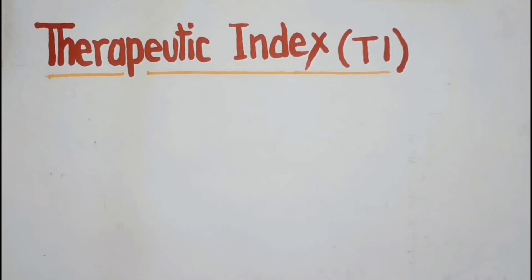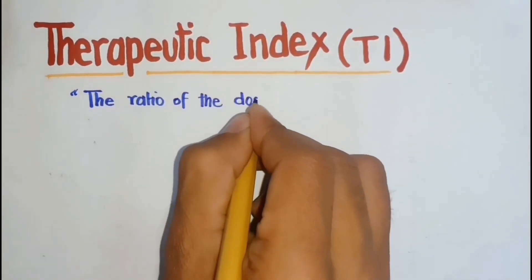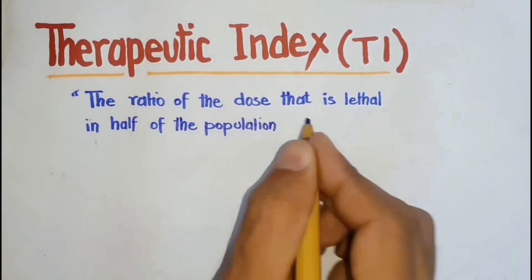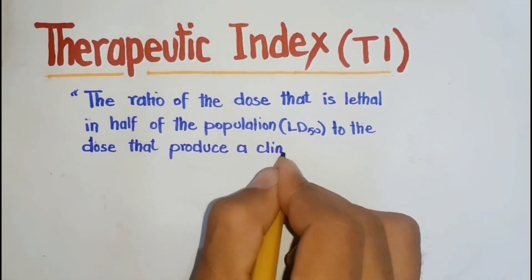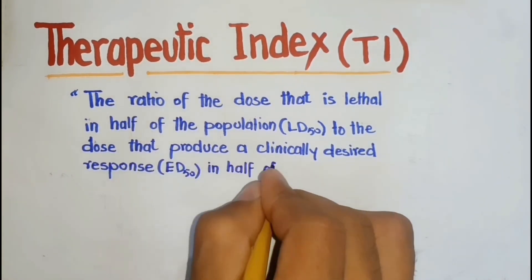The therapeutic index of a drug is the ratio of the dose that is lethal in half of the population to the dose that produces a clinically desired or effective response in half of the population.